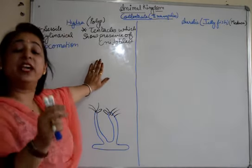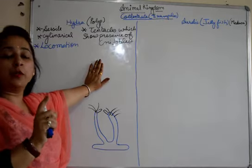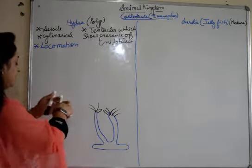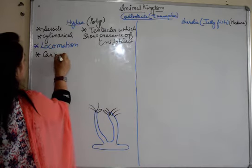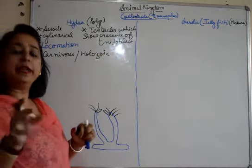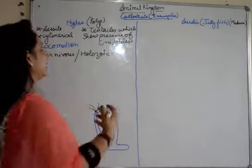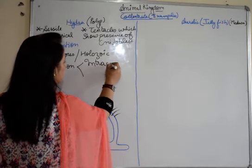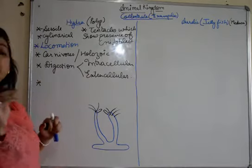The characteristic feature is sessile or stationary, but showing type of locomotion also sometimes. It's cylindrical in structure, plus it has tentacles which have nidoblast cells or the stinging cells. Then, they are carnivores and they show holozoic mode of nutrition. They feed on plant and animal matter both, and they show holozoic nutrition. When we talk about digestion, digestion can be intracellular as well as extracellular. So they show these two types of digestions.